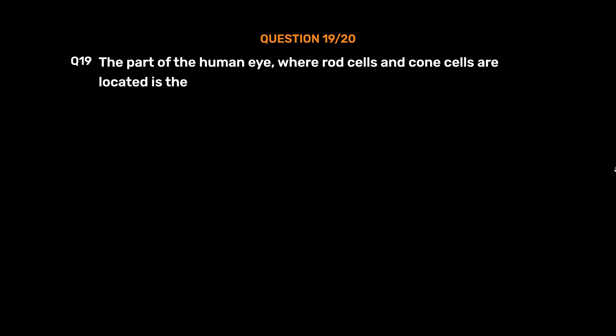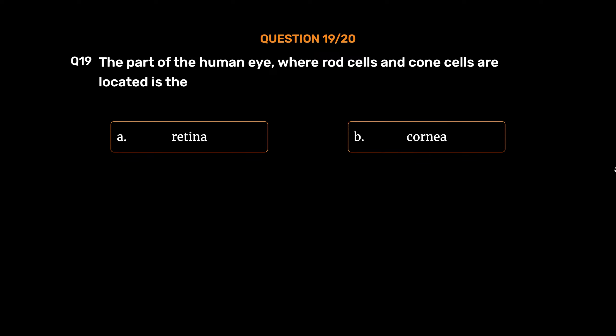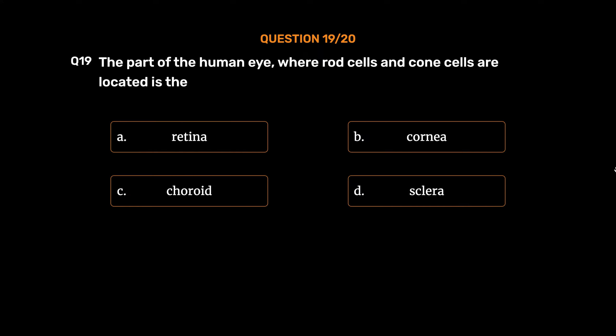Question number 19. The part of the human eye where rod cells and cone cells are located is the: Option A: Retina. Option B: Cornea. Option C: Choroid. Option D: Sclera. The correct answer is Option A: Retina.